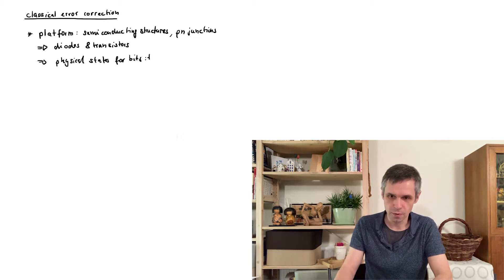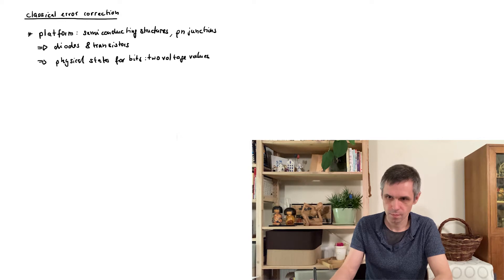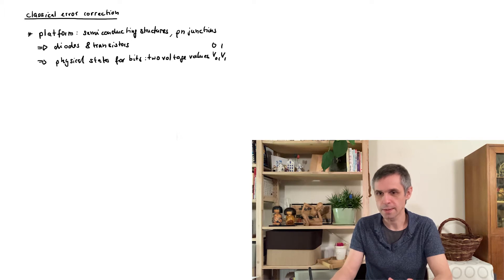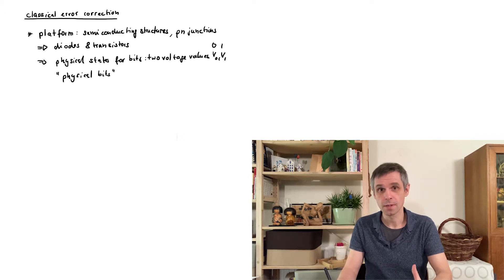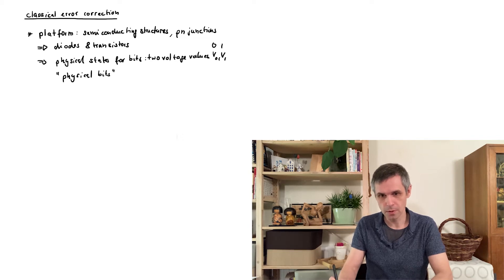And this you can then use to define physical states for your bits, for instance two different values of a voltage. That you then identify as the states 0 and 1 and these are known as your physical bits.